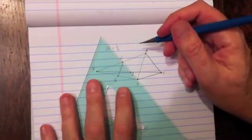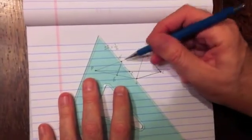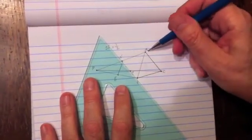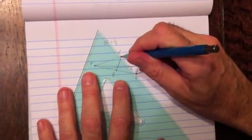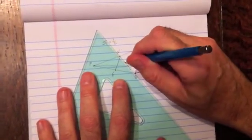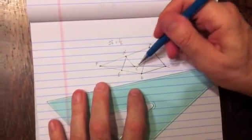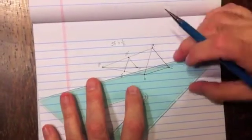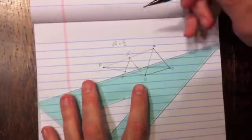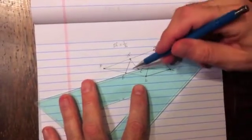Now I connect these other two lines here. A prime to C prime is going to be parallel to AC. So I draw that. And then B prime to C prime is going to be parallel to BC. So I'm going to draw that.